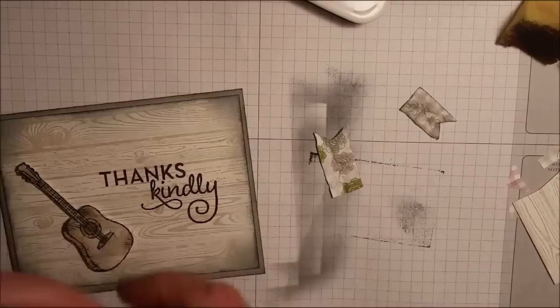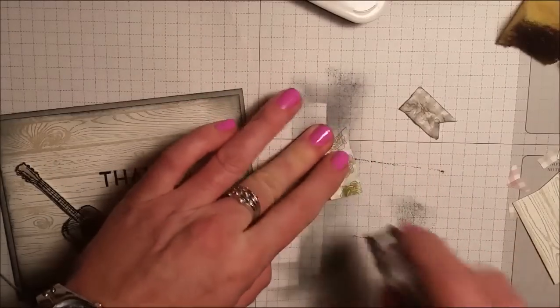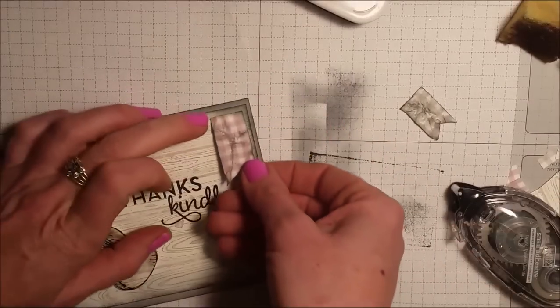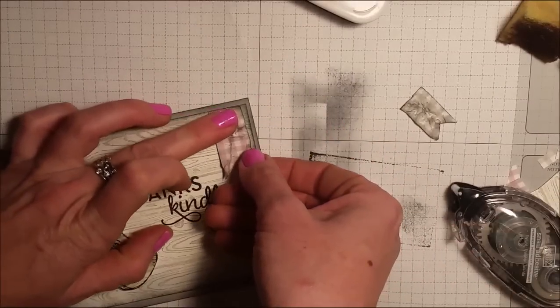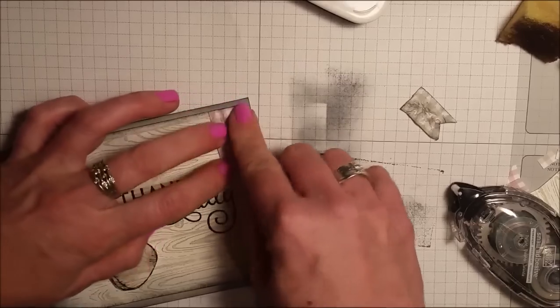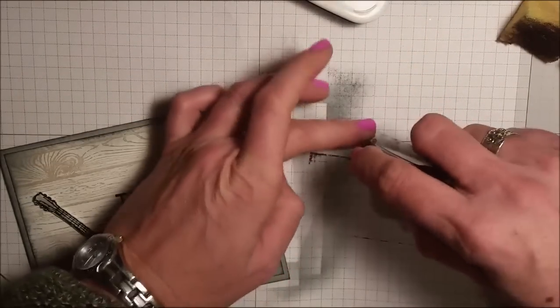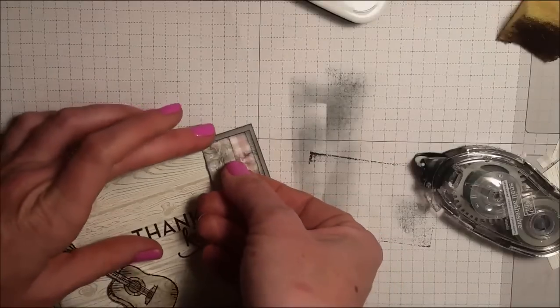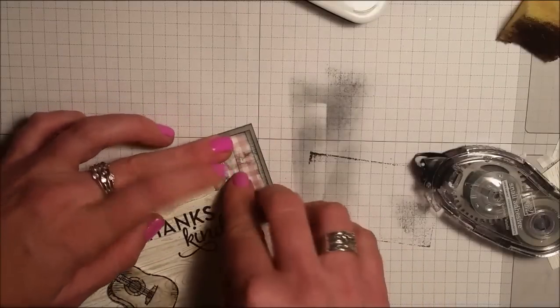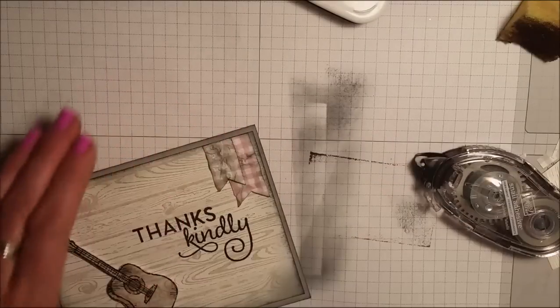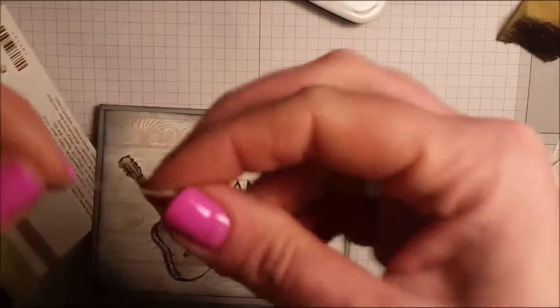Okay, so those are ready to go on the card. Now I'm taking my adhesive and putting this on the top corner. This one's going to go right on top of that. And I'm taking my linen thread and I'm going to make two bows.